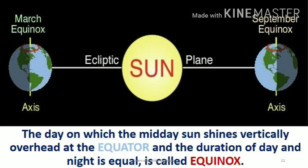Similarly, on 23rd September, which is known as the Autumn Equinox, the sun shines vertically over the equator. This results in equal days and equal nights all over the Earth. During this day, the Northern Hemisphere has autumn season, while the Southern Hemisphere experiences the spring season.